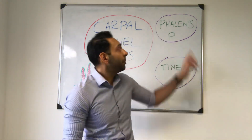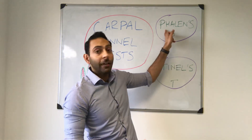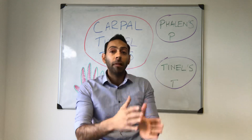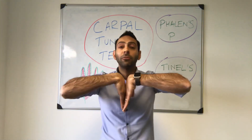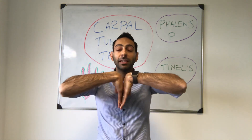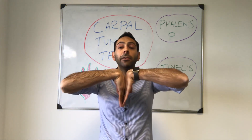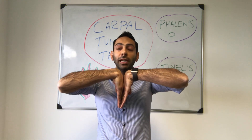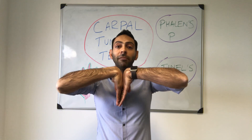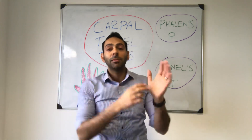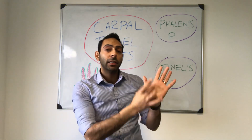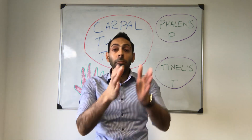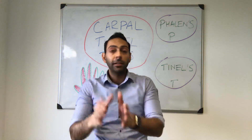Start with Phalen's test. Remember: P for Phalen's is prayer. You flex your wrist for 60 seconds in the inverse prayer position. Hold it like this and eventually you may get a recreation of the symptoms in that median nerve distribution. That's your Phalen's test — P, prayer, Phalen's.